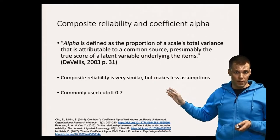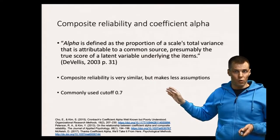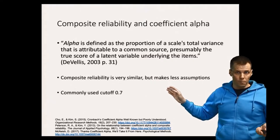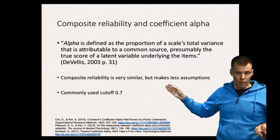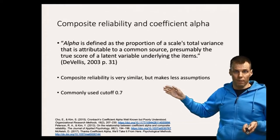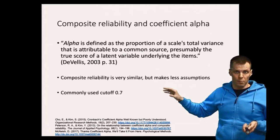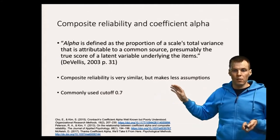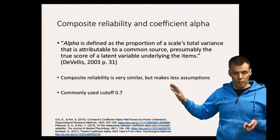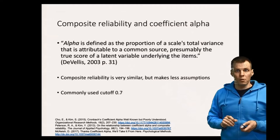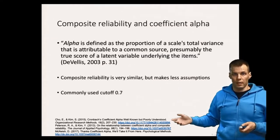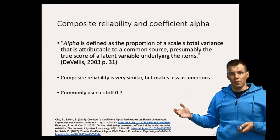You need to do a factor analysis anyway to assess unidimensionality before using alpha, so you already have the input for composite reliability regardless. Using composite reliability as a matter of routine is therefore a better idea than calculating alpha, which makes the more constraining assumption that all indicators are equally reliable. This argument for the superiority of composite reliability over coefficient alpha has been made in a number of papers — for example, Cho and McNeish make that kind of argument.